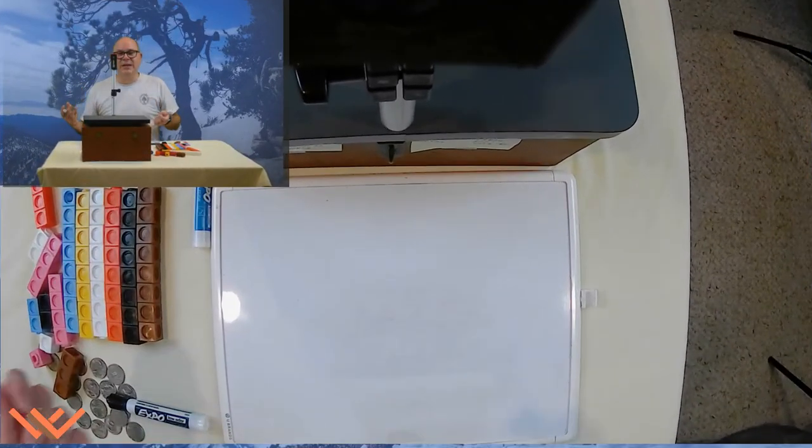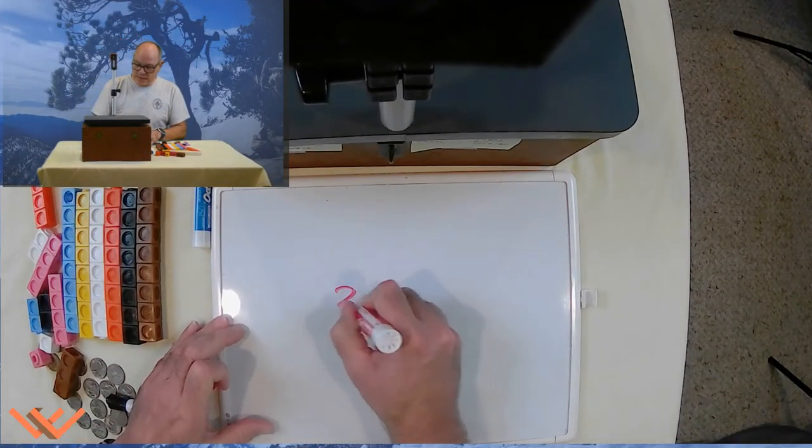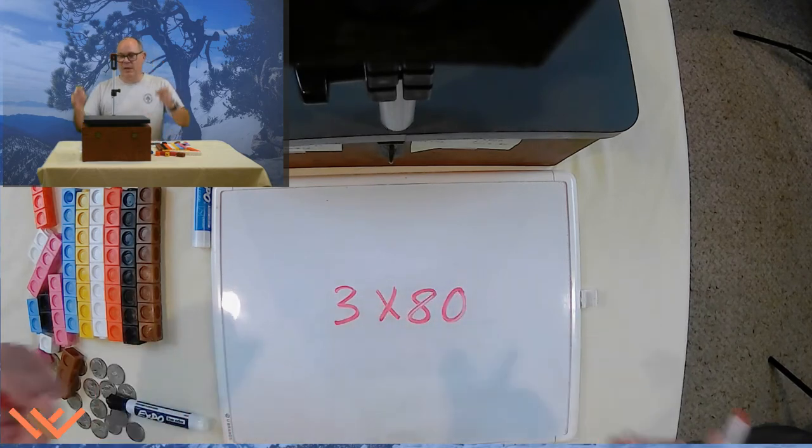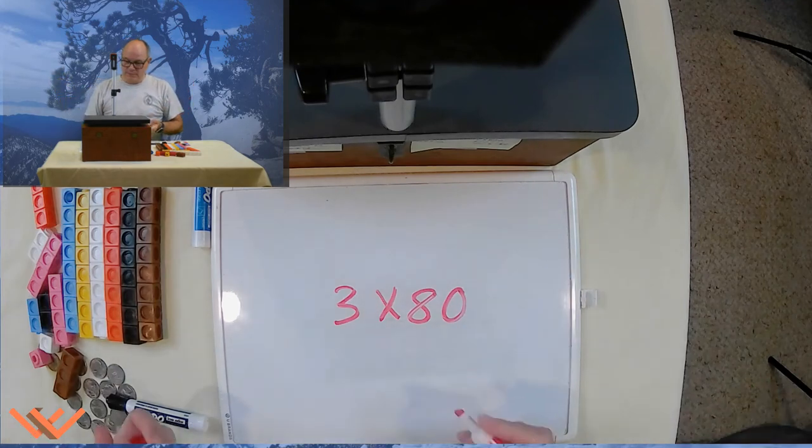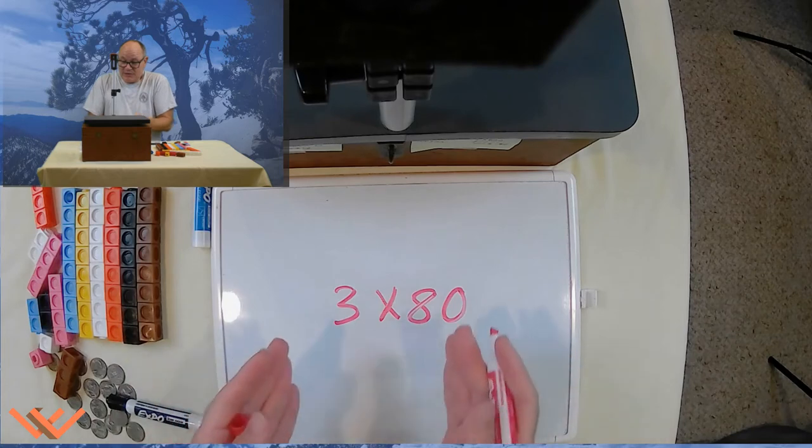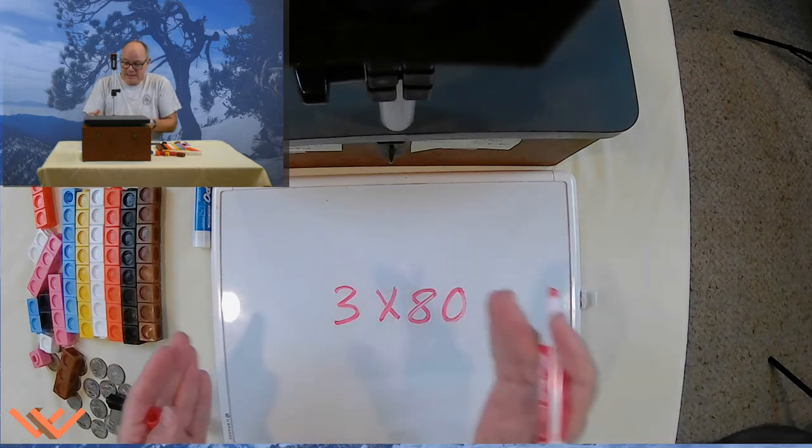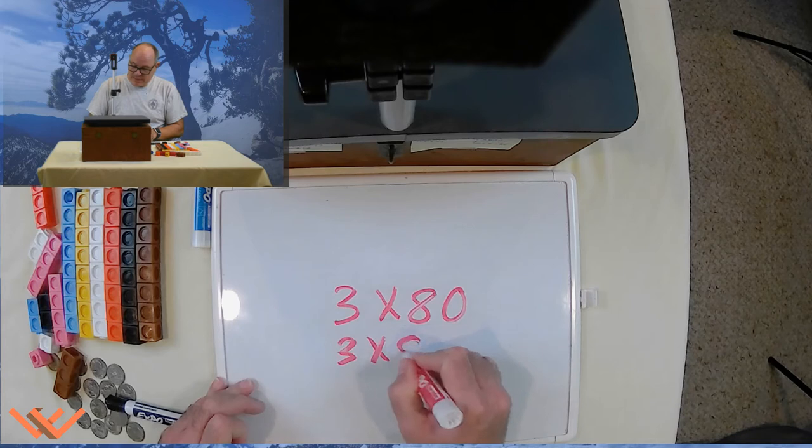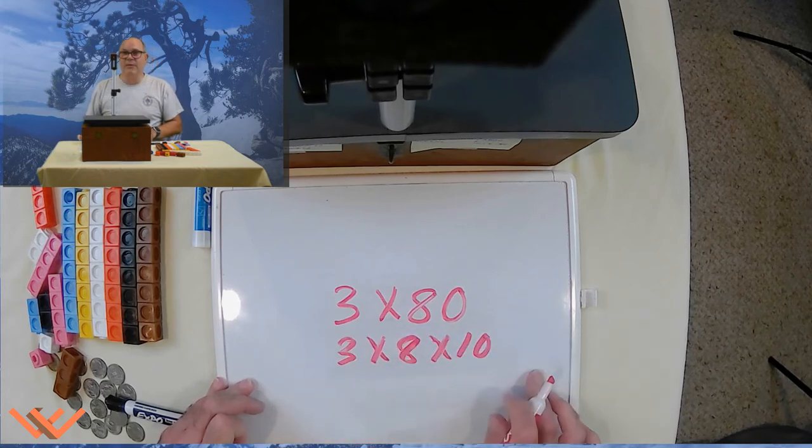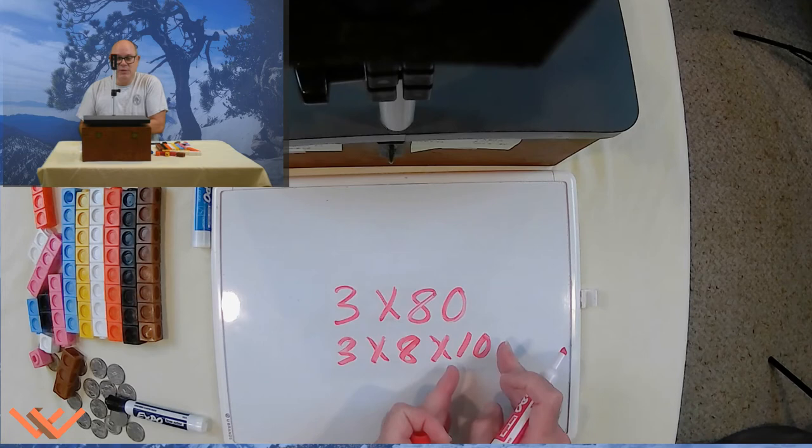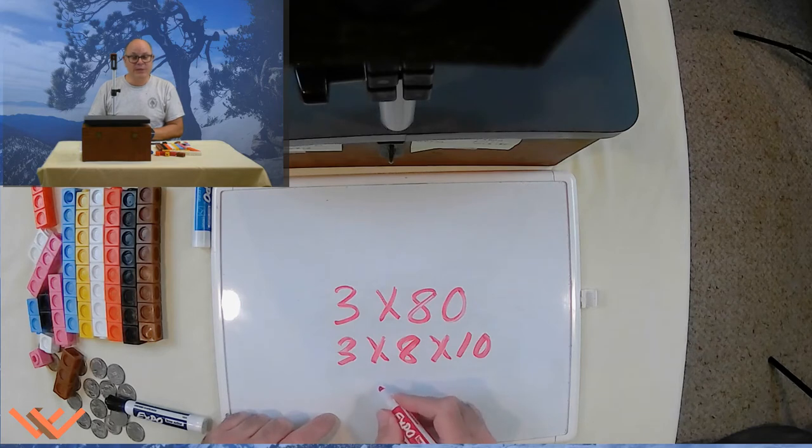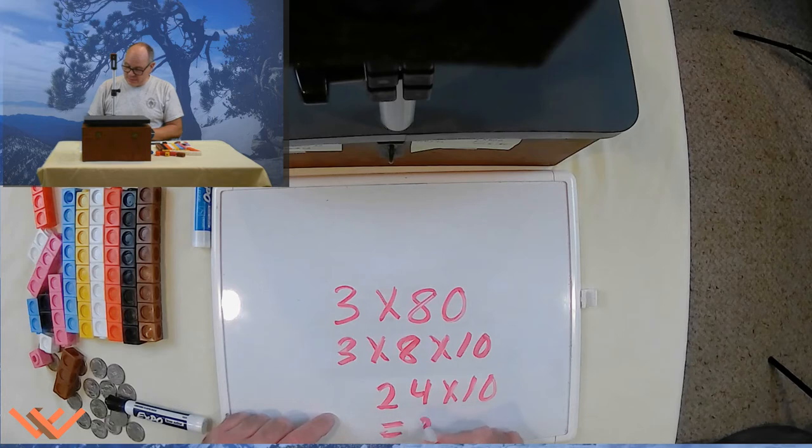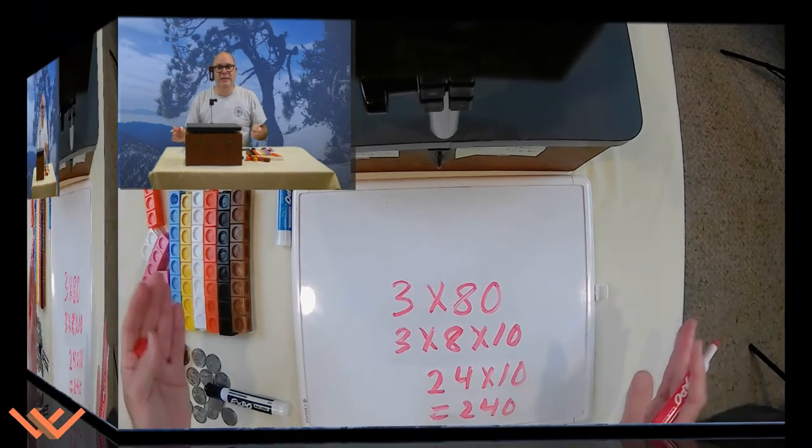Now, when we get up into something else where it's like, let's say 3 times 80, you're going, oh no, wait a minute, what is that? Well, same thing. Treat it as if it's 3 times 8 times 10. So 3 times 8 times 10. When you do it that way, it makes it so that we're removing that 0 out of the problem. So 3 times 8, you should know that by now, it's 24 times 10. That equals 240. See how easy this is?